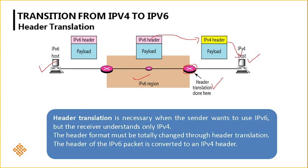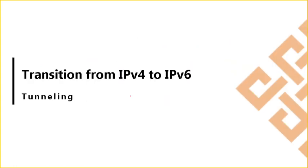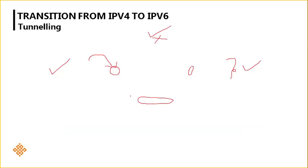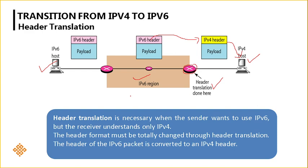This header translation at the edge converts IPv6 into an IPv4 header, making it easily understood by the IPv4 host at the destination side. So these are the three techniques for transition from IPv4 to IPv6: dual stack, tunneling, and header translation. Thanks for watching — subscribe to my YouTube channel for more videos.